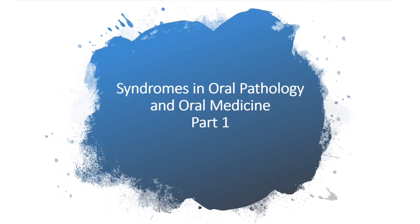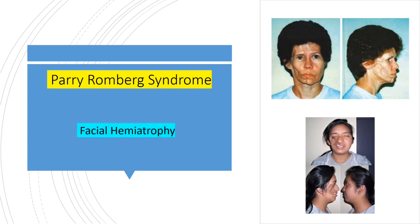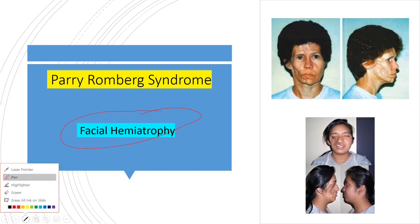In this lecture we are going to talk about some of the syndromes in oral pathology and oral medicine. First we'll start with Parry-Romberg syndrome. Looking at the pictures of two patients, we can see some similarities — one half of the side of the face is atrophied, meaning wasted away. This is Parry-Romberg syndrome, also called facial hemi-atrophy.